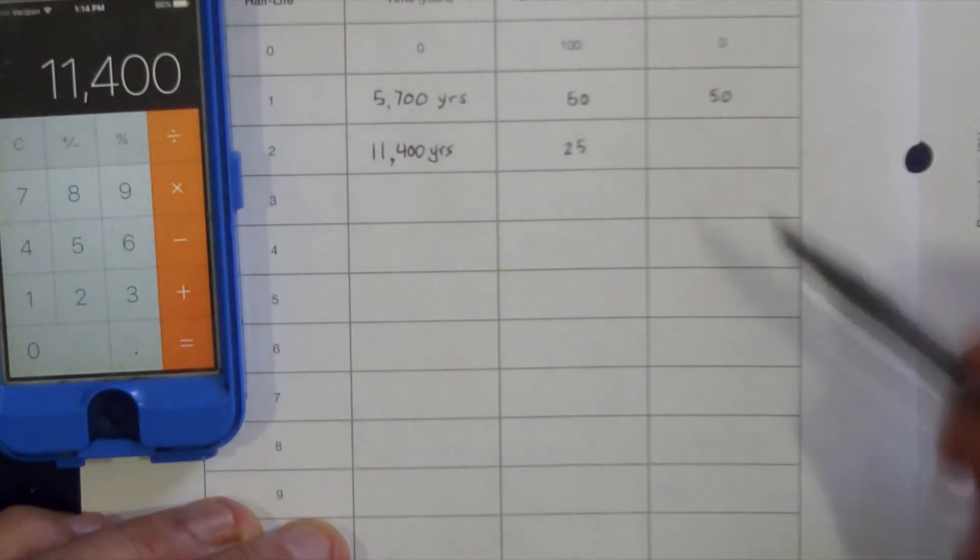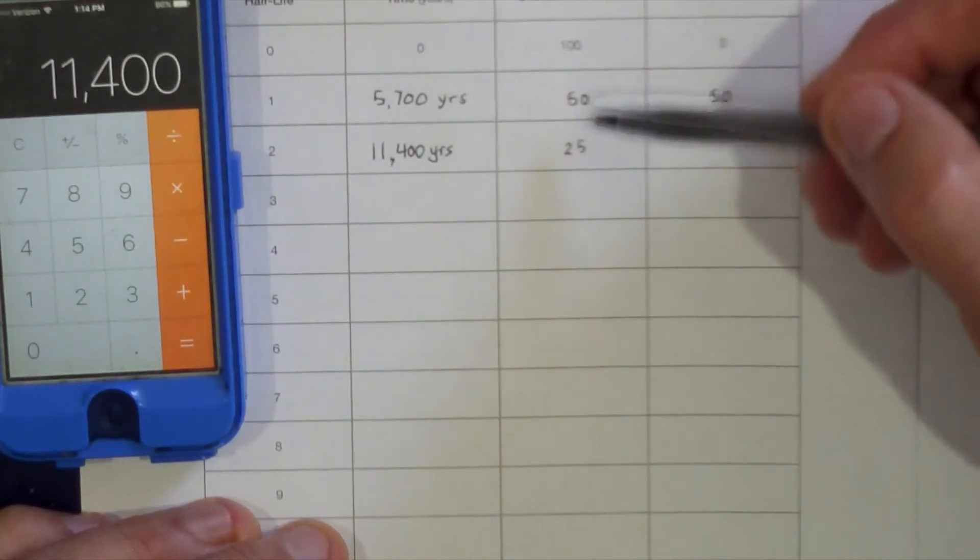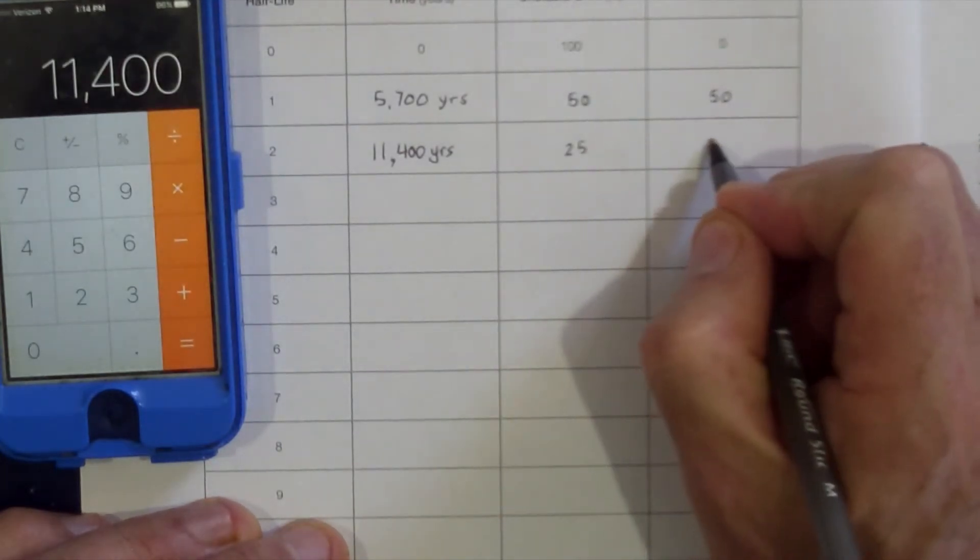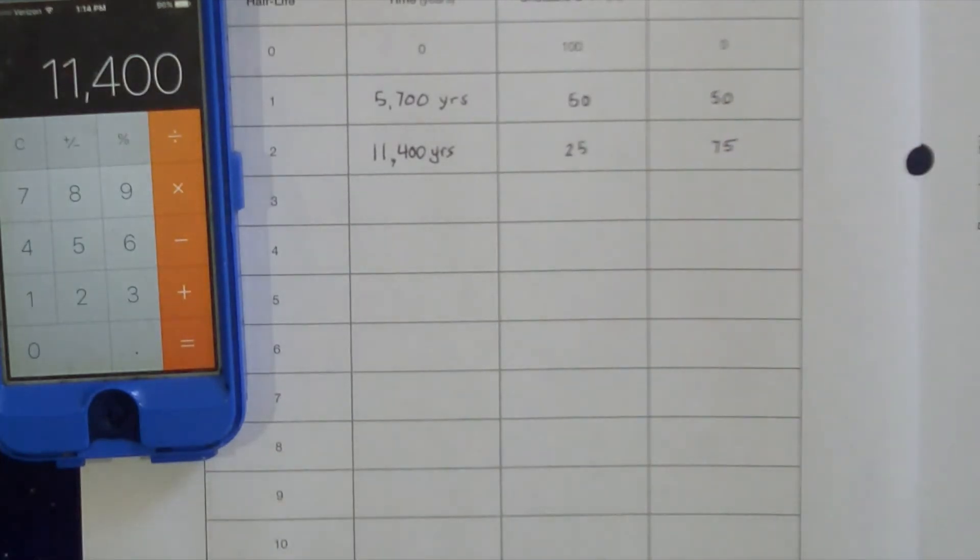Now we can figure out how much Nitrogen-14 we have. Since we started off with 100% Carbon-14 and only have 25% Carbon-14, we now have 75% Nitrogen-14 in our sample. At the end of three half-lives...